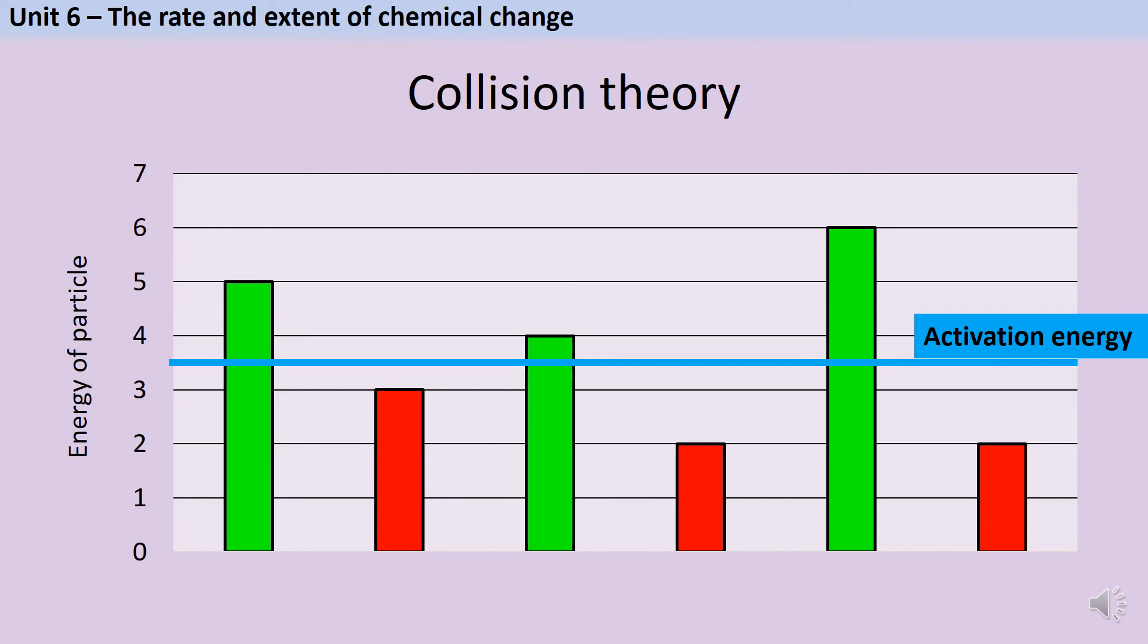Now let's say that we heat up the solution, and we give all of these particles slightly more energy. The three particles that already met that minimum threshold, that activation energy, are still making the cut. But there's now one additional particle that didn't have sufficient energy before, but now after heating it does. This now means that rather than 50% of my particles being able to react when they collide, two thirds of them can. And this is going to increase the rate of reaction.